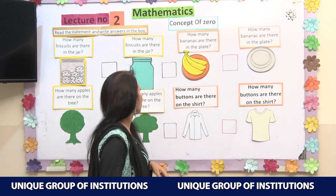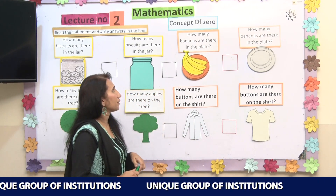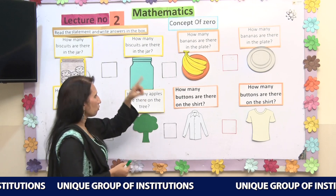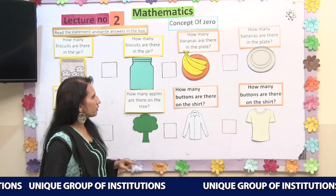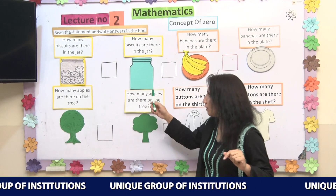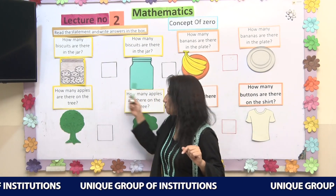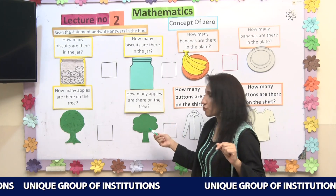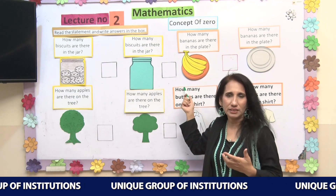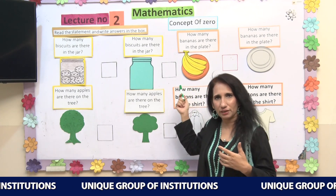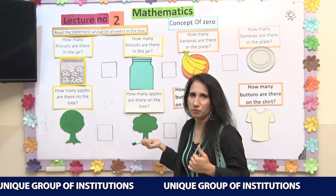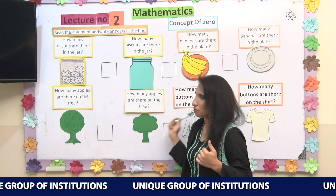So let's do some activity regarding this concept of zero. You can see on my board there are so many things: some jars, a tree, a shirt, and one plate. Let's see what I am going to do with all these concepts.